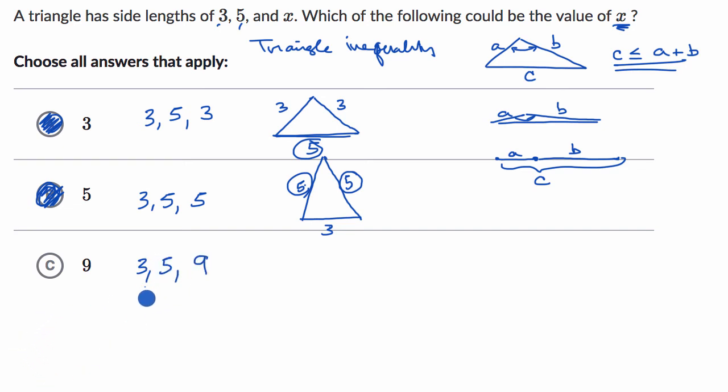So immediately your spider senses might be tingling a little bit. Because you might realize that look, nine is not less than or equal to the sum of three and five. It is not less than or equal to eight, which is three plus five. And you could see why not only does this violate the triangle inequality, why this would be an impossible triangle to construct.